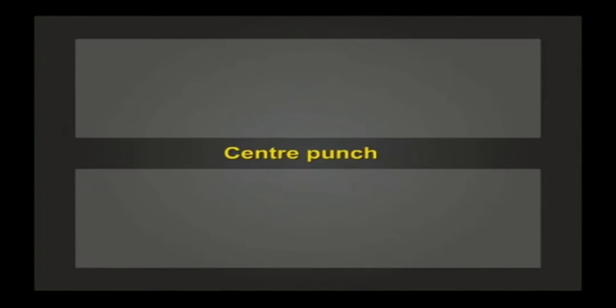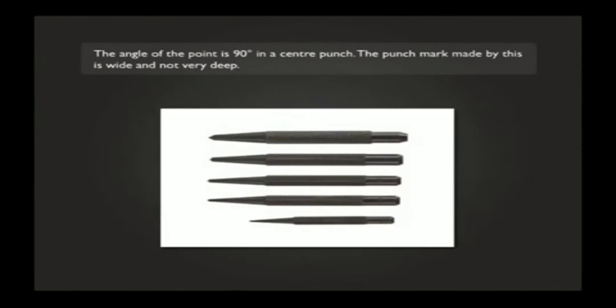The angle of the point is 90 degrees in a center punch. The punch mark made by this is wide and not very deep. This punch is used for locating holes.